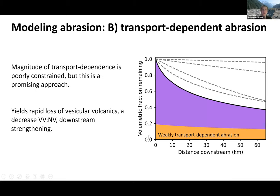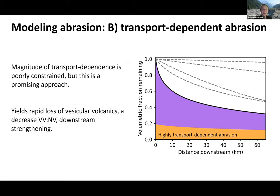Playing with transport-dependent abrasion really depends on how high we tune that transport dependence. The flume experiments don't give us particularly strong constraints on how intense this transport-dependent effect is. But either a weakly or a highly transport-dependent abrasion effect does give us that rapid loss of the weakest grains in the first 10 to 15 kilometers downstream from the source. It also results in downstream strengthening of grains in the bed surface. Transport-dependent abrasion seems to be one way to replicate some of the patterns we're seeing in the field.